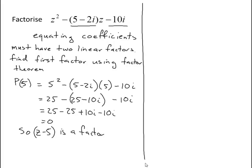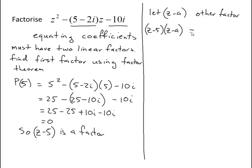Now, how do we use that? I'm going to let z minus a be the other factor. So z minus 5 times z minus a are my two factors. Because when I expand that out, they're going to equal z squared minus (5 minus 2i) times z minus 10i. The last terms, minus 5 times minus a, give me the constant.